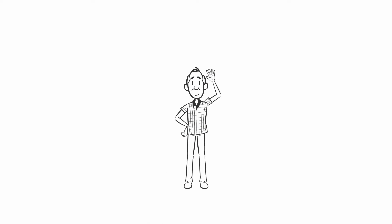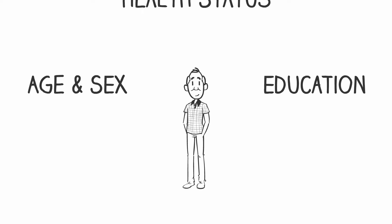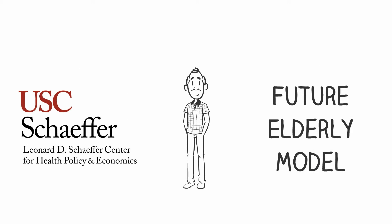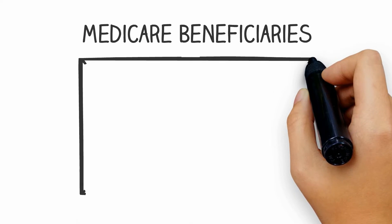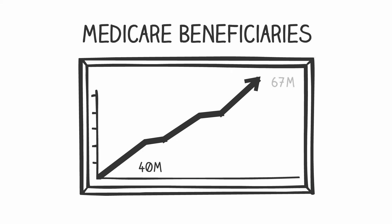As baby boomers age, we know that the Medicare system will face important demographic changes. We use the Schaeffer Center's Future Elderly Model to predict what the Medicare population will look like by 2030 and what that will mean for taxpayers. Between 2010 and 2030, the population of Americans who are 65 and older will grow from 40 million to 67 million.